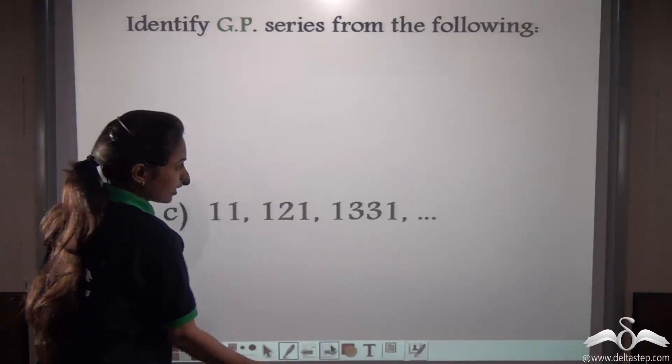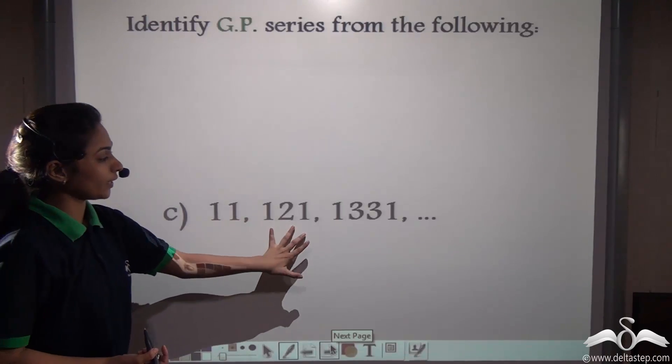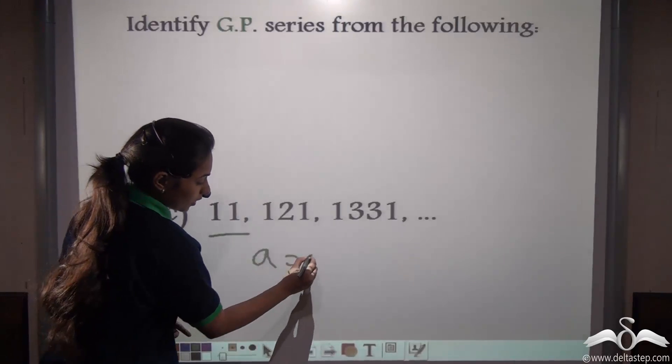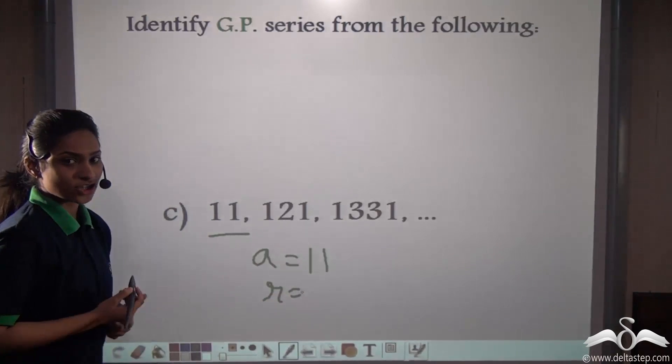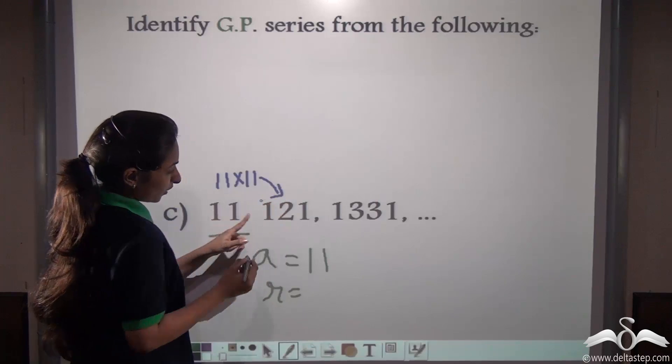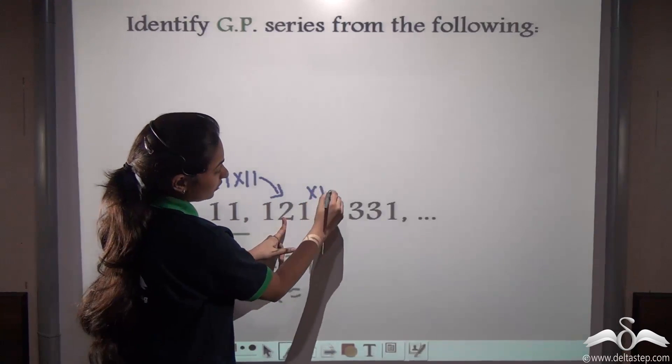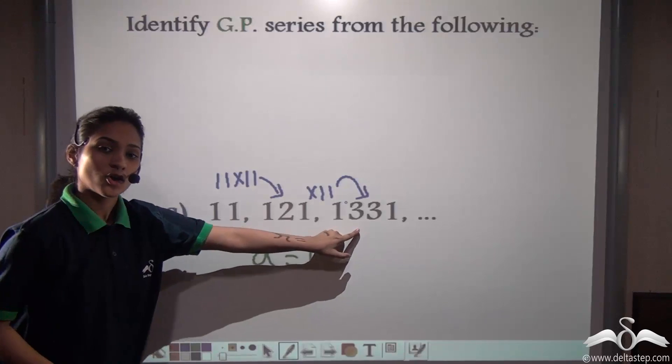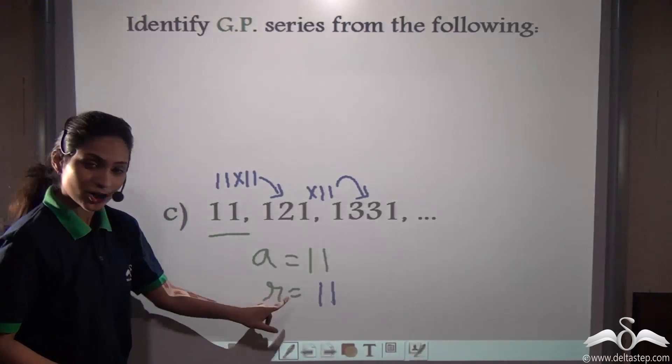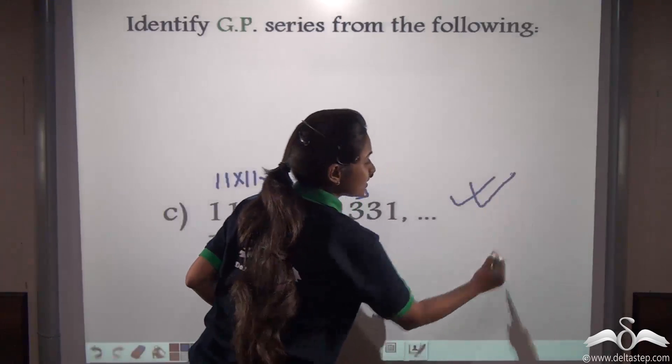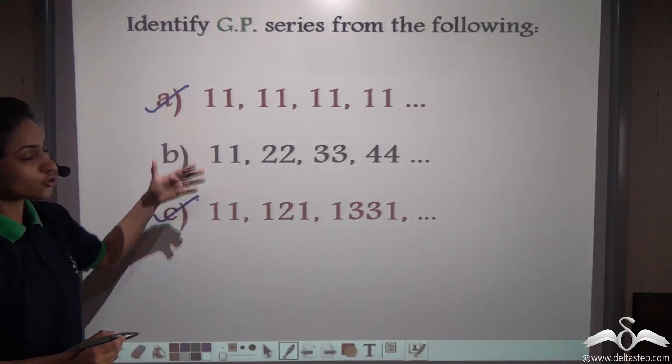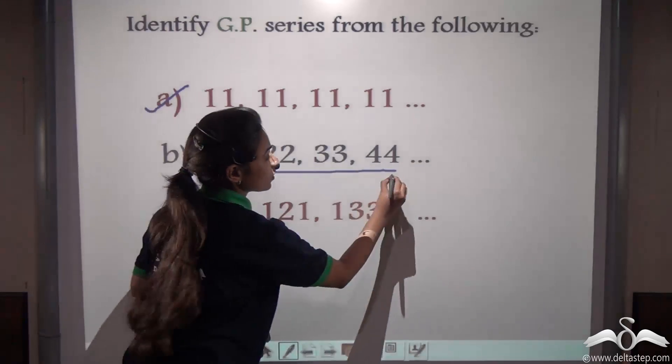Now we have another example. Let's look at that. The third one, 11, 121, 1331 and so on. Again the first term is 11. Do we have any common ratio here? Check and tell me. 11 into 11 gives me 121. Now 121 into 11 gives me 1331. So again you see you get a common ratio here which is constant. So here the common ratio is there. So this is a GP series. So from all these three choices, this one and this one, these two are GP series whereas this was an AP series.